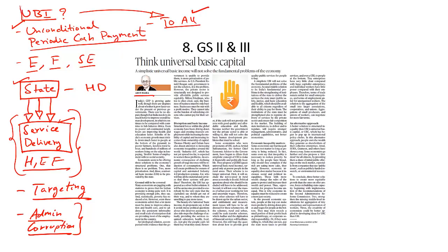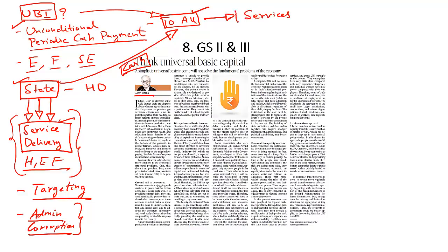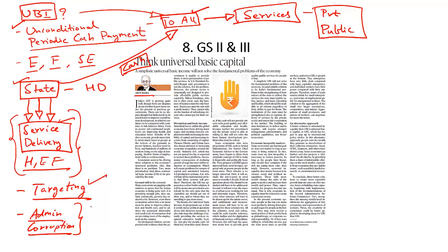Under a universal basic income model, the government would transition completely from the current model — instead of focusing on service delivery, it would directly make cash payments to citizens, who in turn can access basic services directly from the market, from both private and public service providers. The concept of UBI has clear advantages: it eliminates the problem of targeting and reduces dependency on government machinery that has become ineffective and corrupt.